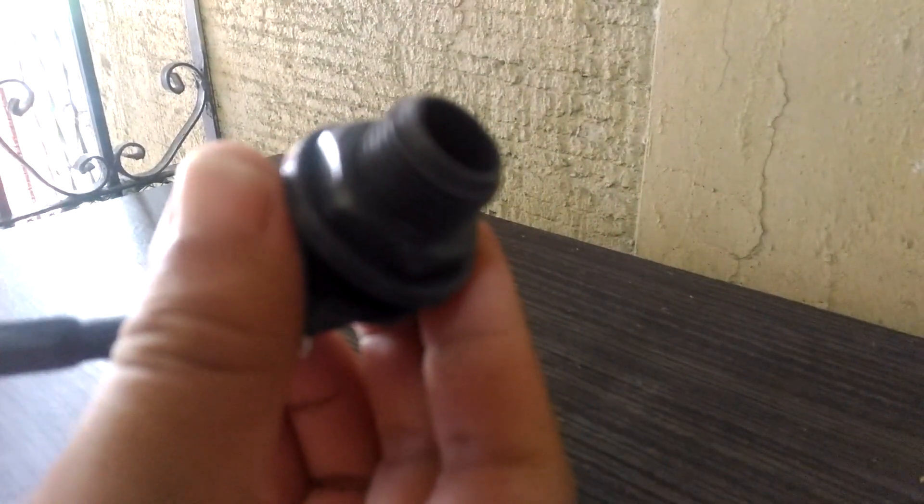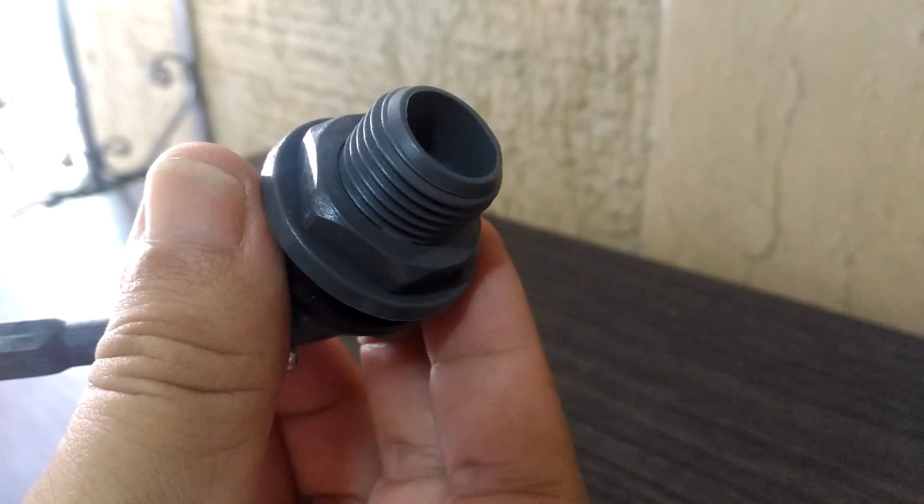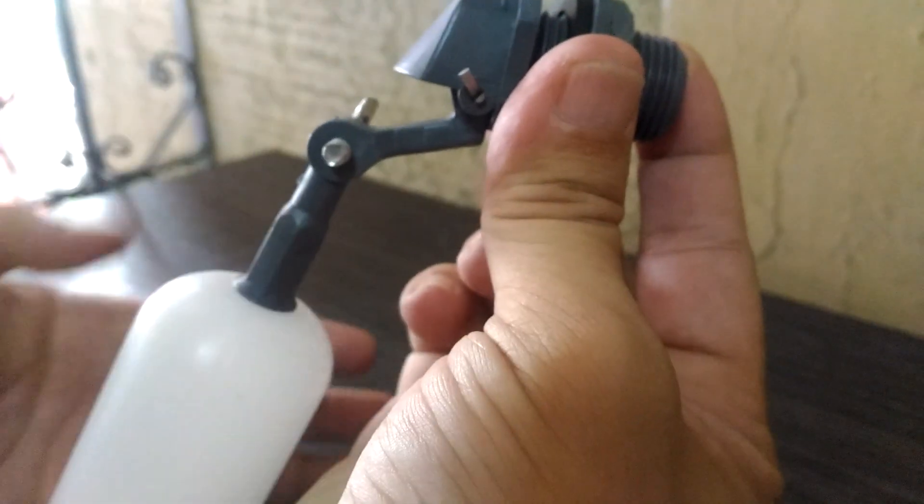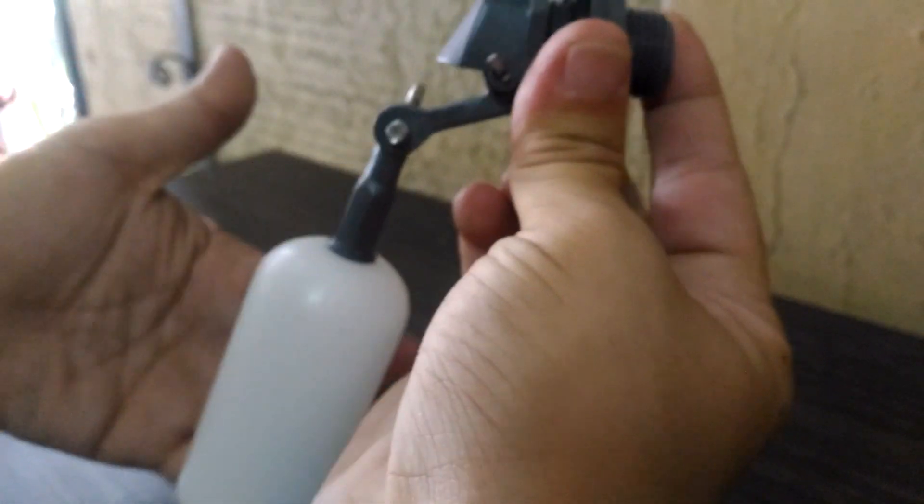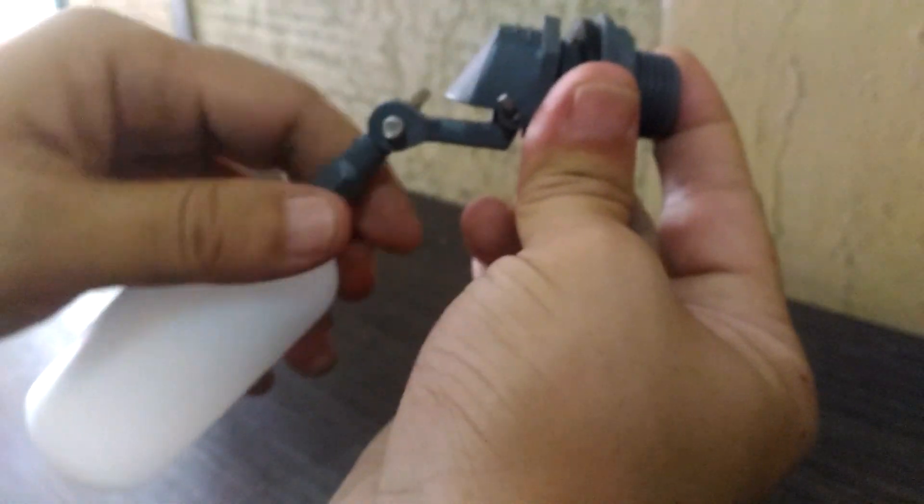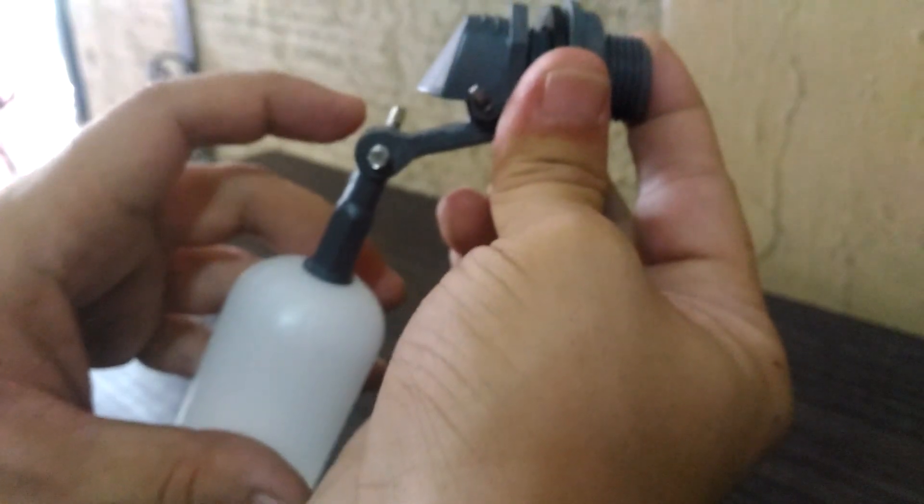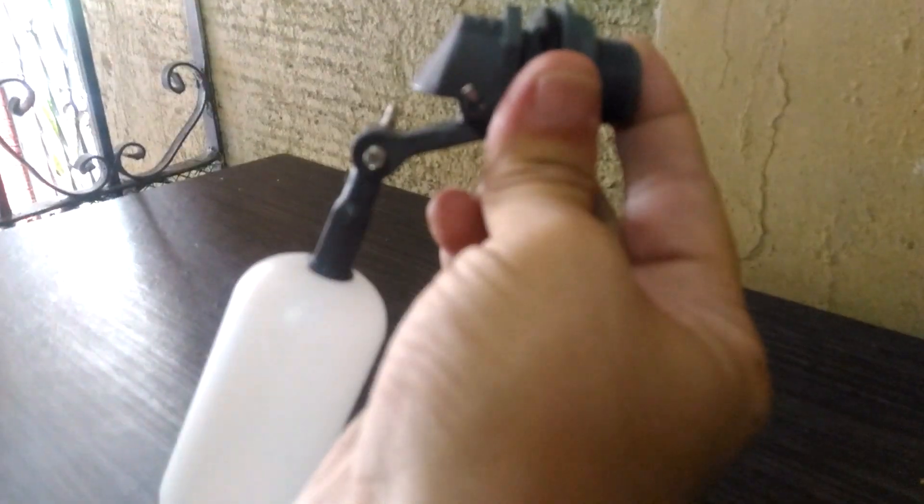You basically have an inlet here where water comes in and flows out to the spout. And you have a plastic ball here, in this case a cylinder, that's filled with air. It is attached to an arm that has a valve on the other end which opens or seals the spout depending on the angle of the arm.